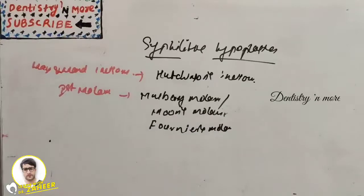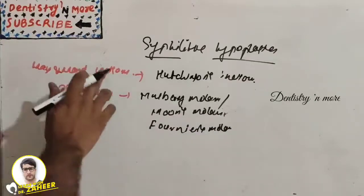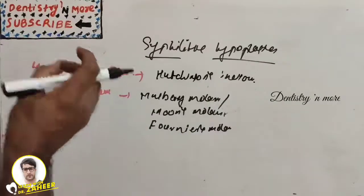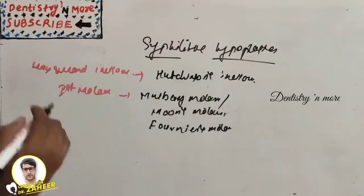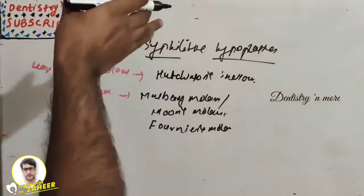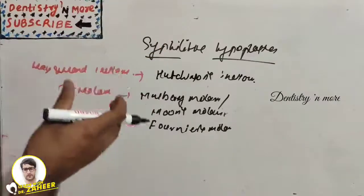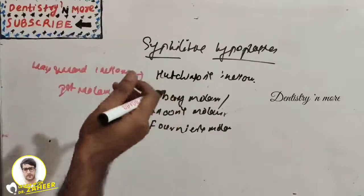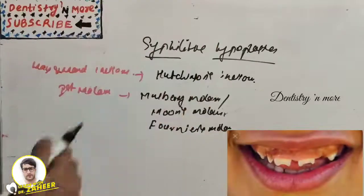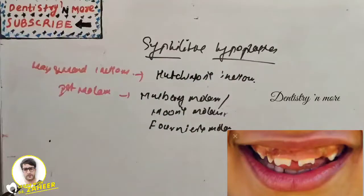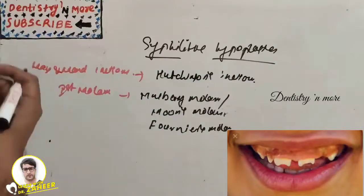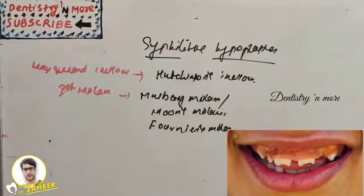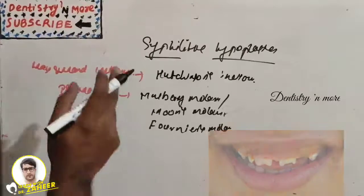Hutchinson's incisors, as seen in the picture, show upper central incisors that are screwdriver-shaped. The mesial and distal surfaces of the crown taper and converge towards the incisal edge rather than towards the cervical area. The incisal edge is also notched, due to absence of the central tubercle or calcification center.